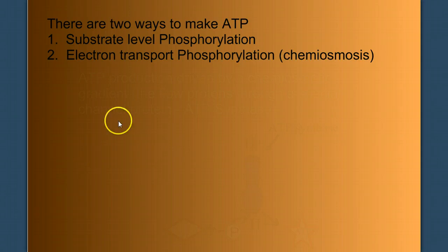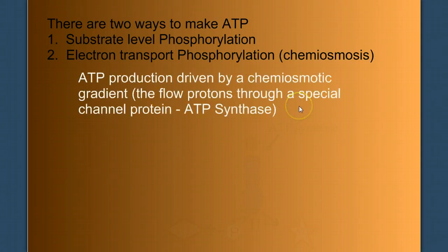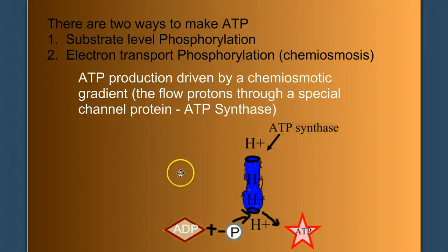In electron transport phosphorylation, ATP production is driven by a chemiosmotic gradient, the flow of protons through a special channel protein that we call ATP synthase.